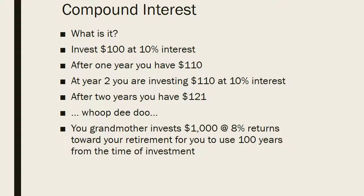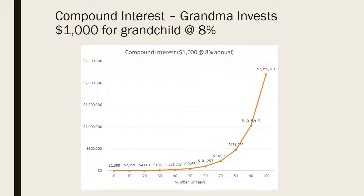Let's say your grandmother decides to invest $1,000 at an 8% return towards your retirement, for you to use 100 years from the time of investment. How much do you have at the end of this process? Is it going to be $10,000, $25,000, or even $50,000? The answer is about $2.2 million. The nature of compound interest is that at the beginning it's $1,000; after 10 years it's over $2,000; 20 years, $4,000; 30 years, $10,000; 40 years, $21,000; 50 years, $46,000 — growing and growing until after 100 years you end up with $2.2 million.